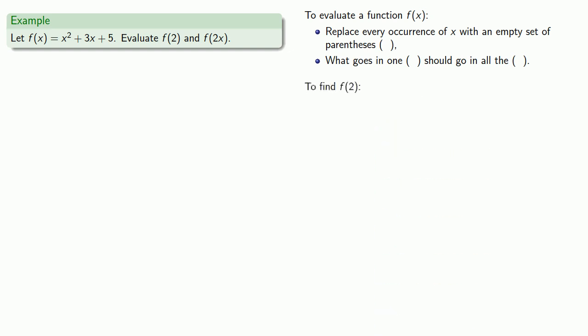So if I want to find f(2), well, paper is cheap, so let's copy down our function definition. We'll replace every occurrence of x with an empty set of parentheses. And then, whatever we put in one set of parentheses should go in all of them. What we want to have in here is 2. So we'll put 2 in here and in all the other places. And at this point, there's some arithmetic we have to do, so we'll do that. And equals means replaceable. f(2) is equal to 15.